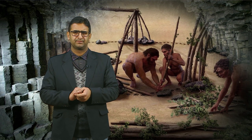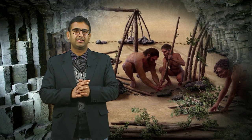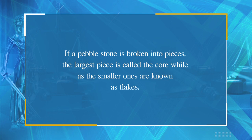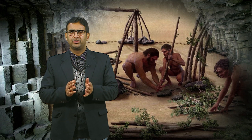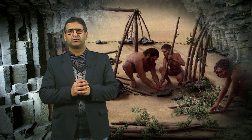The stone tools found from many archaeological sites constitute an important source to understand the lives of humans in the prehistoric period. It is very important to understand the techniques employed by these societies for the fabrication of tools. Generally speaking, if a pebble stone is broken into many pieces, the largest piece is called the core, while the smaller ones are known as flakes. The tool made from the core is known as the core tool, while tools made from flakes are known as flake tools. The process of removing flakes from a rock is known as flaking, and the marks cast on the surface of the core tool while flaking are known as flake scars.